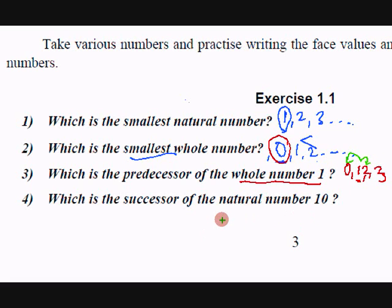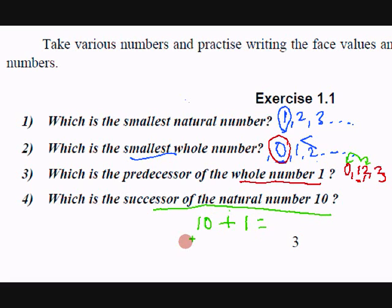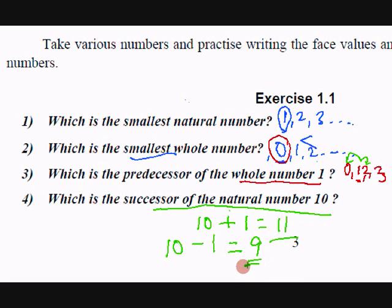What is the successor of the natural number 10? Successor means you add 1 to it. So 10 plus 1 is 11. What is the predecessor? You subtract 1, which equals 9. So predecessor is 9, successor is 11.